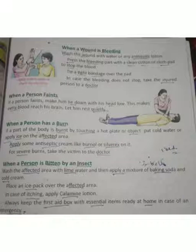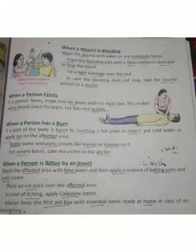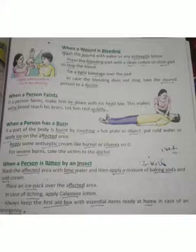اگلا موضوع: when a person faints۔ اگر کسی کو چکر آئے یعنی وہ unconscious ہو جائے تو ہم کیا first aid دے سکتے ہیں؟ If a person faints, make him lie down with his head low۔ اس کو لٹائیں اور اس کا سر body کے مقابلے میں lower level پر رکھیں۔ اس position سے extra blood اس کے brain تک پہنچ سکتا ہے اور وہ جلد اپنے senses میں آ سکتا ہے۔